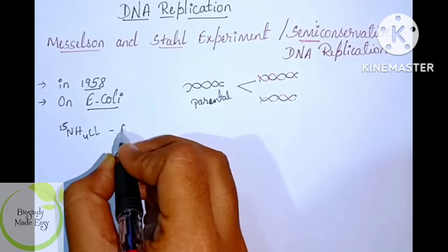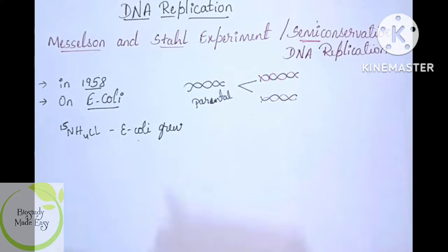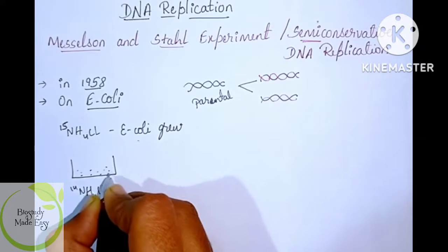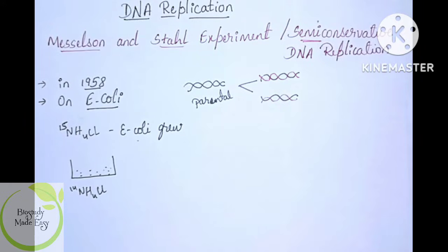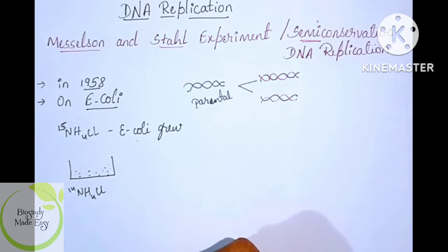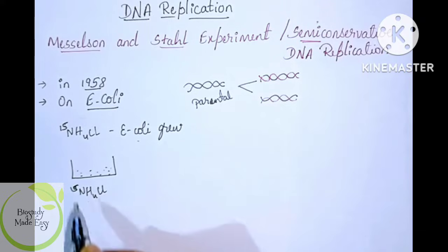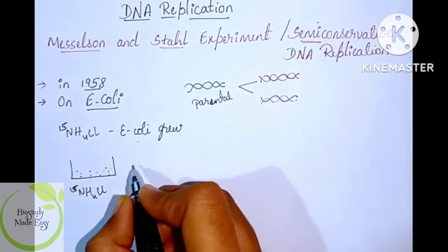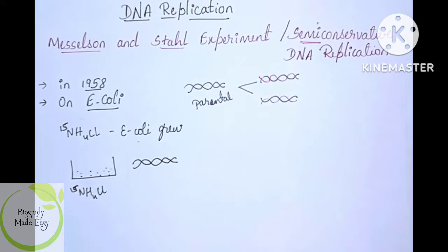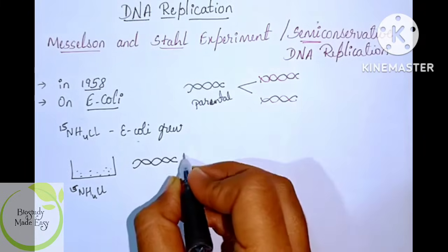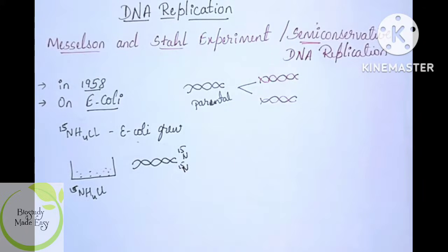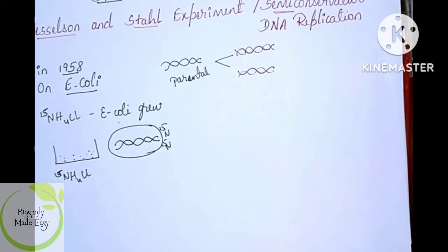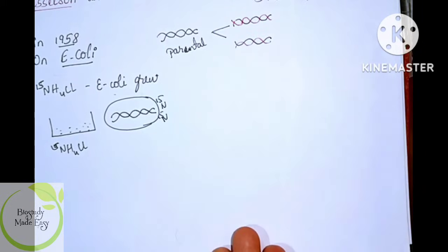The E. coli was grown in the N15 ammonium chloride medium. When talking about this ammonium chloride medium — the DNA of E. coli incorporated the N15 heavy nitrogen. So the DNA in E. coli grown in N15 medium contains N15, N15, and N15 — meaning all nitrogen in the DNA is the heavy N15 form.